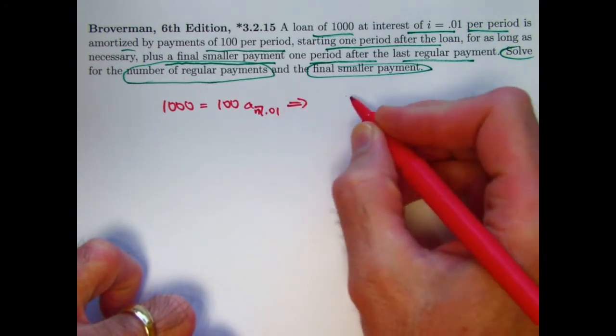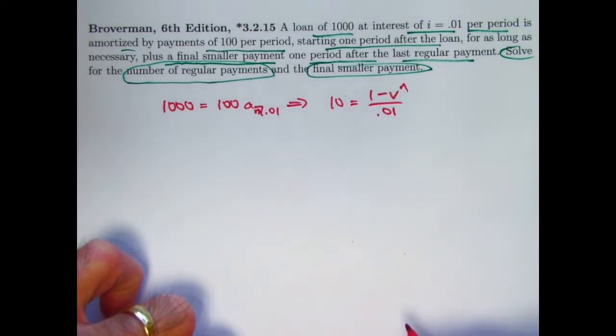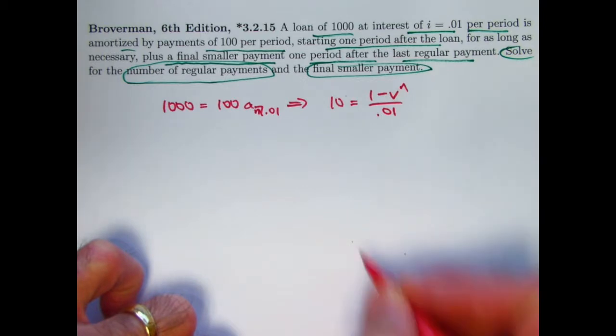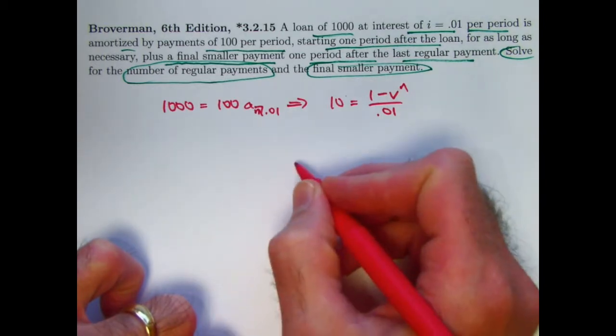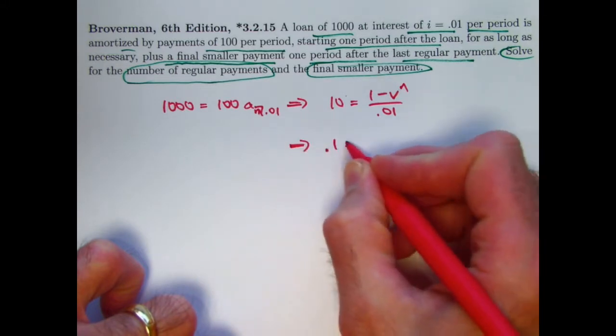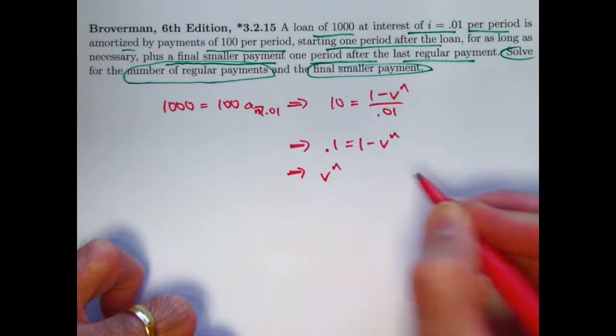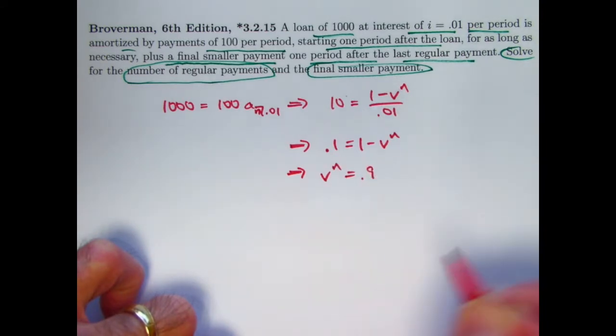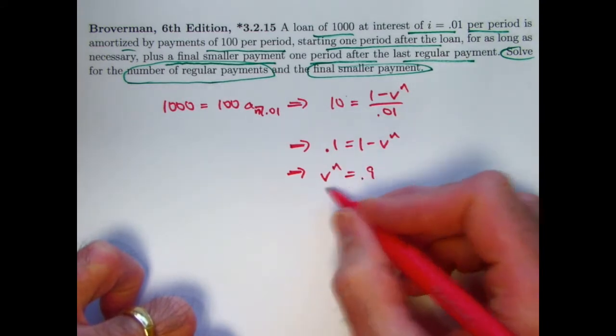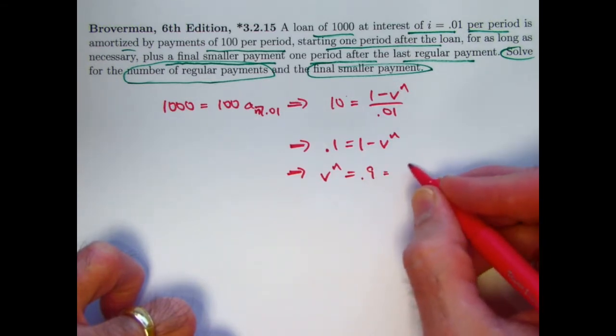Let's divide both sides by 100 and write the equation in this way. We want to solve for n. I can now multiply both sides by 0.01 to get this equation. Isolate v to the n. V to the n is going to be 1 minus 0.1 is 0.9. I know what v is - it's 1 over 1.01.